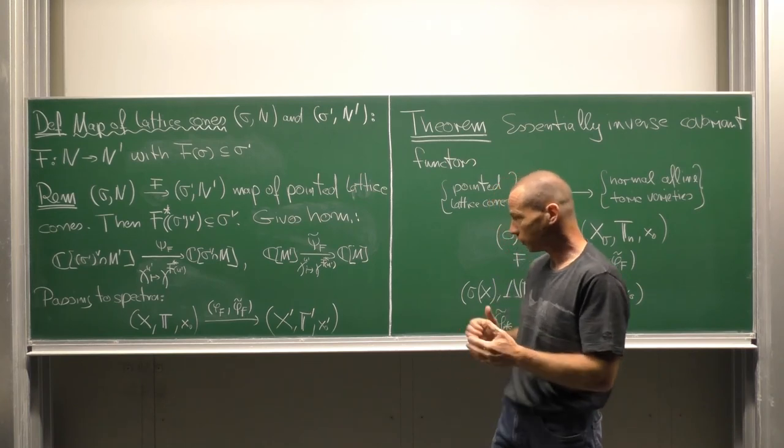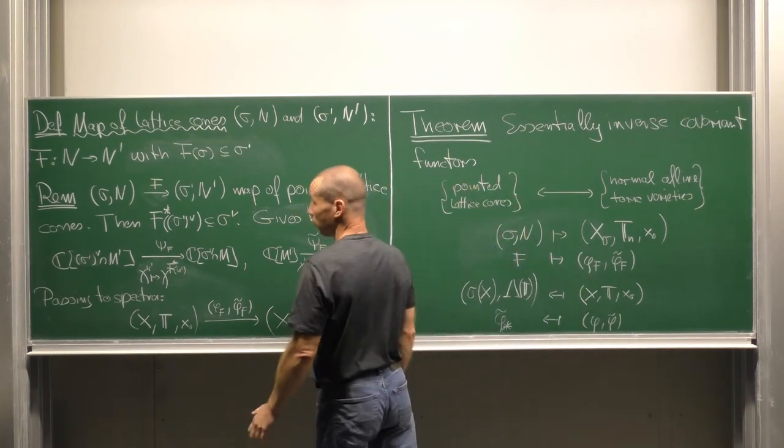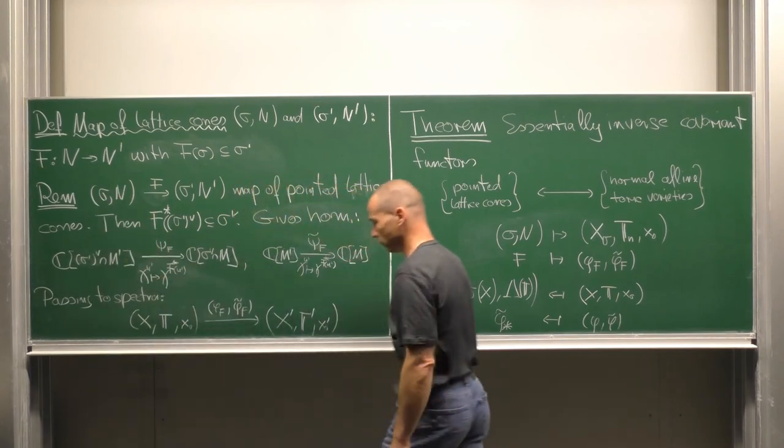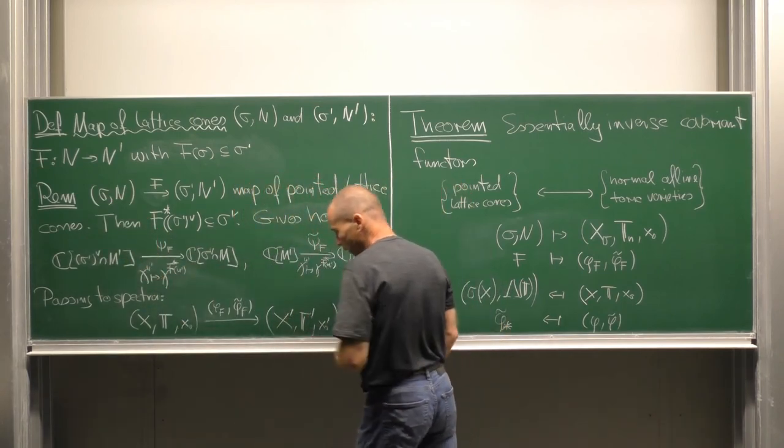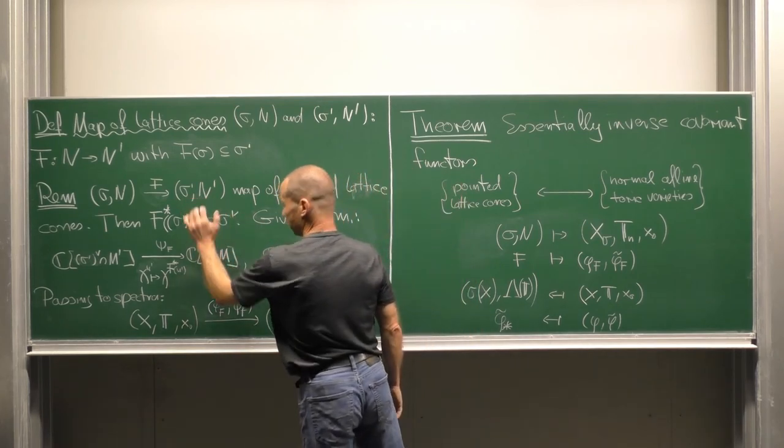We obtain a homomorphism of the tori, and all together gives us a toric morphism from the toric variety X, T, x_0, associated with this lattice cone, into the toric variety X', T', x_0', associated with that lattice cone.